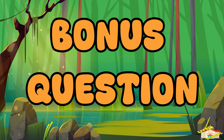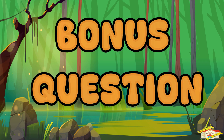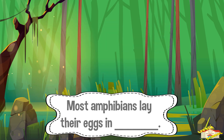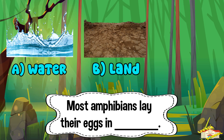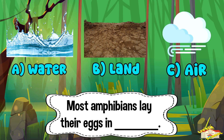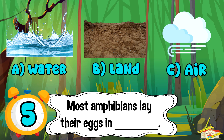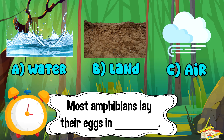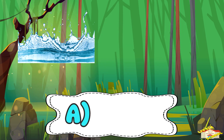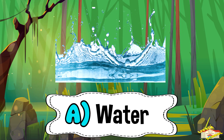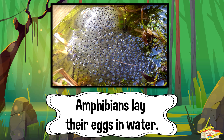Time for a bonus question! Most amphibians lay their eggs in blank. A) Water, B) Land, or C) Air? Five, four, three, two, one. And the answer is letter A — water. Amphibians lay their eggs in water.